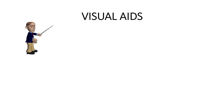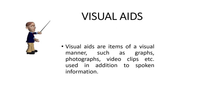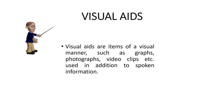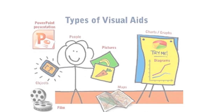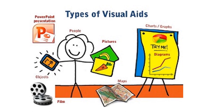So what are visual aids? Visual aids are items of a visual manner, such as graphs, photographs, video clips, etc., used in addition to spoken information. If I just read out this line, you won't be able to interpret what I am trying to explain — you may find it boring. But if I show you this picture, it gives you a clear idea of visual aids.